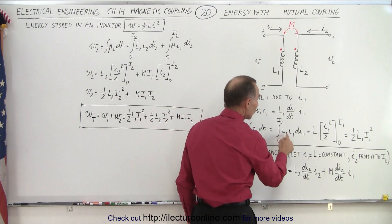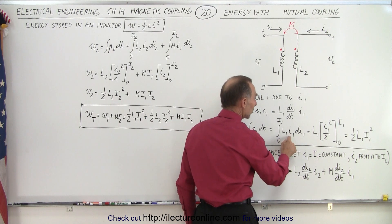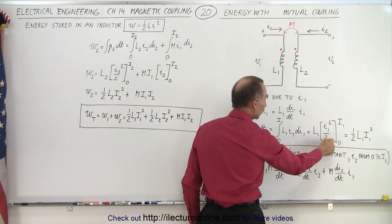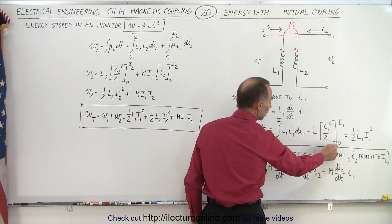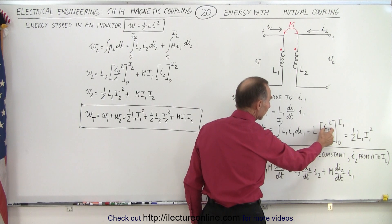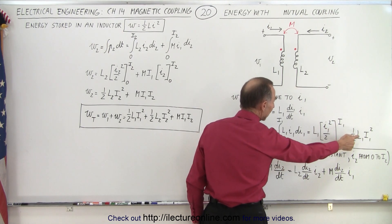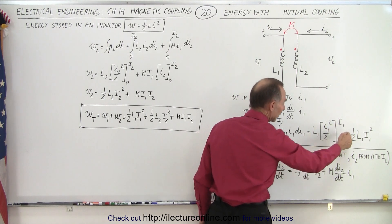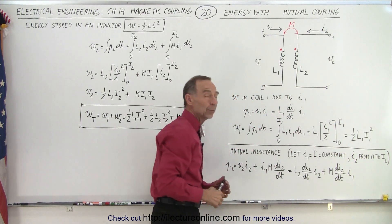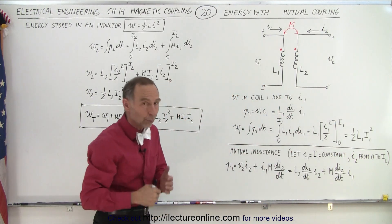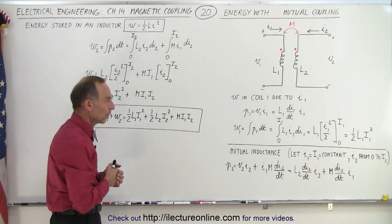Since L is a constant we only have to integrate i·di, so that becomes i squared over 2. We plug in from 0 to i1 — the lower limit gives 0, the upper limit gives i1 squared. So again we see that the energy contained within the inductor is one half L times i squared.